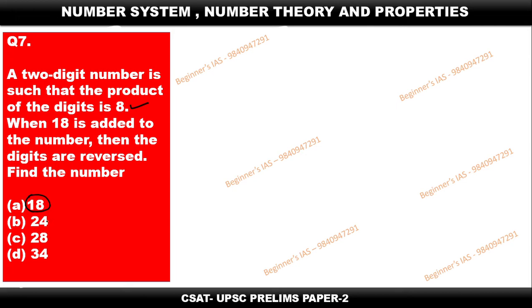So since the product of the digits is 8, but here 2 into 8 is 16, therefore this is not possible. Then 3 into 4 is 12, this is also not possible. So always try to eliminate as much as possible.